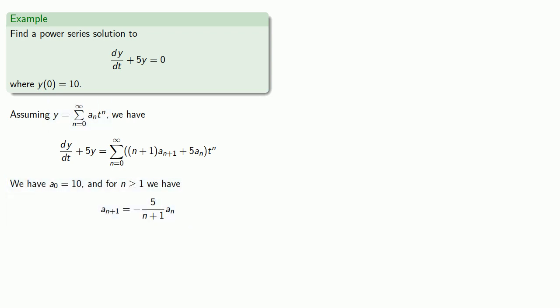But let's actually find a couple of the coefficients so we can get some feel for what this solution looks like. So we already know a0, and we know how to find a(n+1) from an.